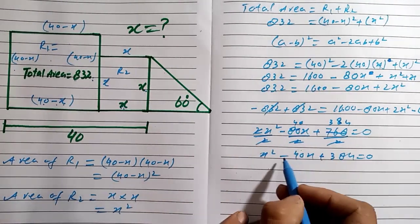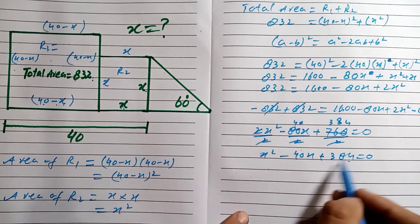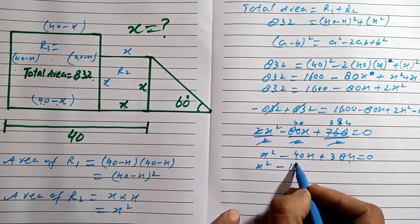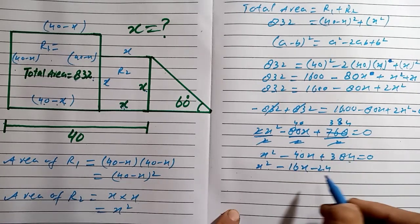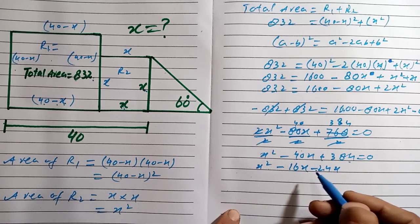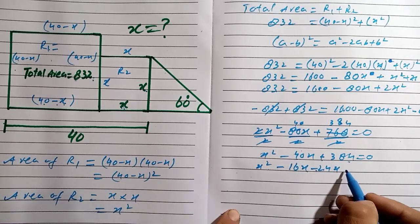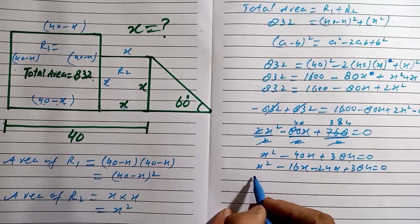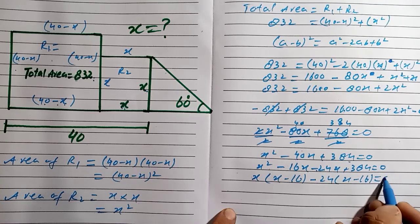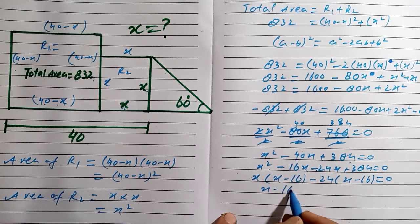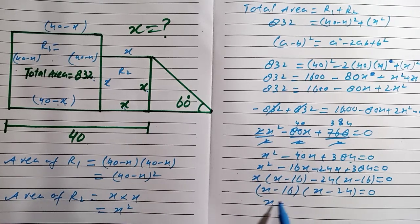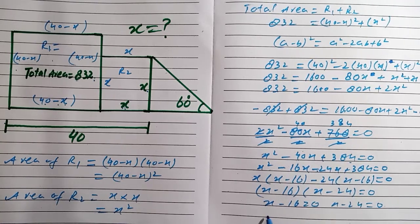To factorize, we split 40x into two parts such that their product equals 384. We find 16 and 24: 16 multiplied by 24 equals 384, and 16 plus 24 equals 40. So we factor as (x minus 16)(x minus 24) equals 0, giving x minus 16 equals 0 or x minus 24 equals 0.